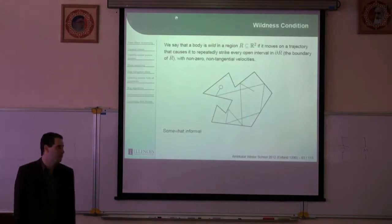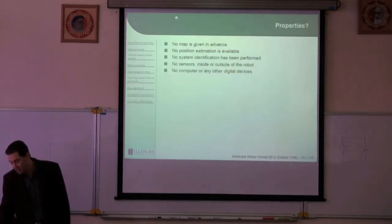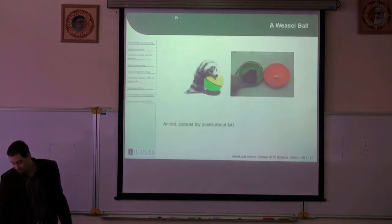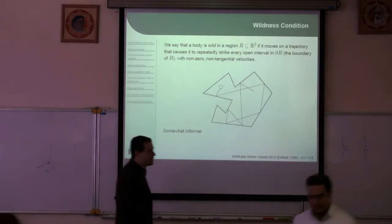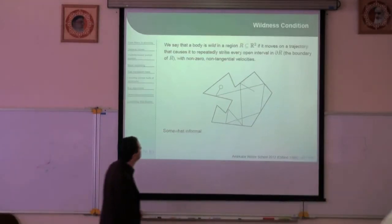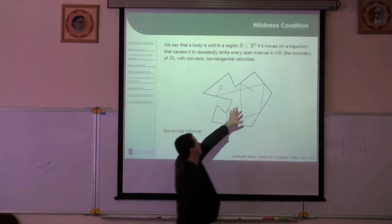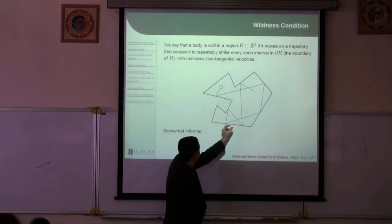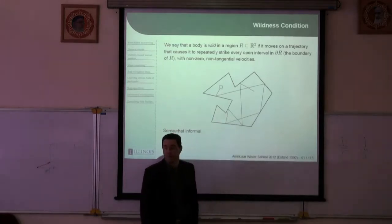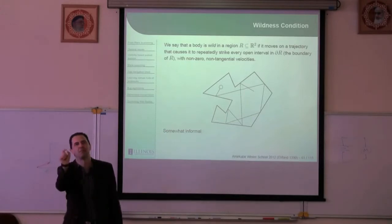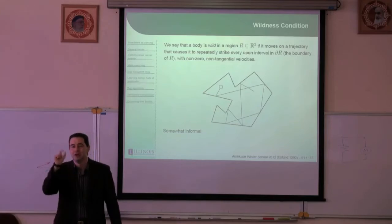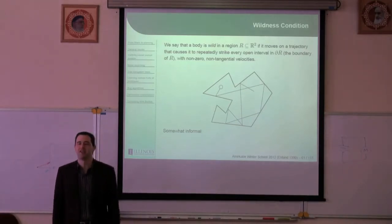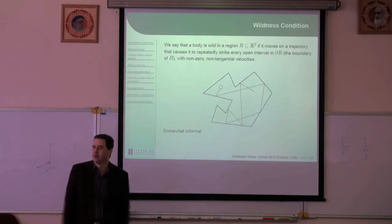Here's a kind of informal description of wildness. I have a body in some region — some subset of a plane. I'll say it's wild if it moves on a trajectory that causes it to repeatedly strike every open interval along the boundary, no matter how small the interval is — any epsilon you like — it'll be called wild if it's guaranteed to hit that interval, infinitely often if you want.